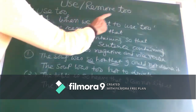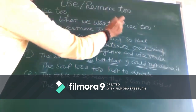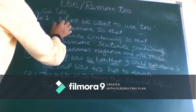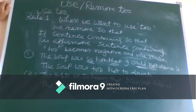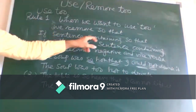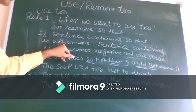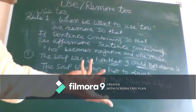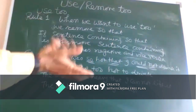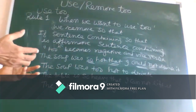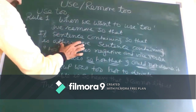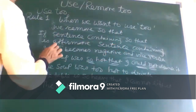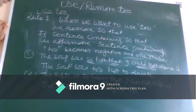Now we will see the reverse: how to use adverb 'too' by removing 'so that.' Rule number one: when we want to convert 'so that' back to 'too...to,' we remove 'so that.' Rule number two: if the sentence containing 'so that' is affirmative, the sentence containing 'too' becomes negative; if the 'so that' sentence is negative, the sentence with 'too' becomes positive.